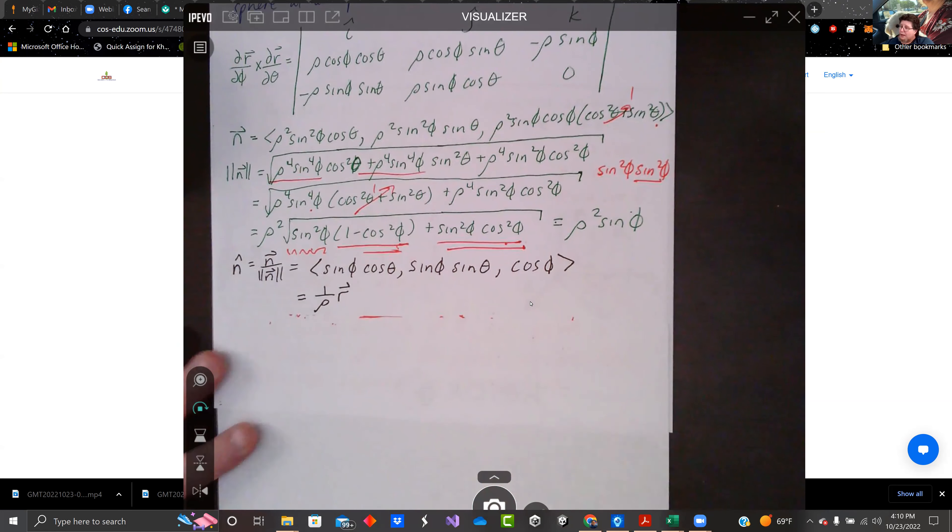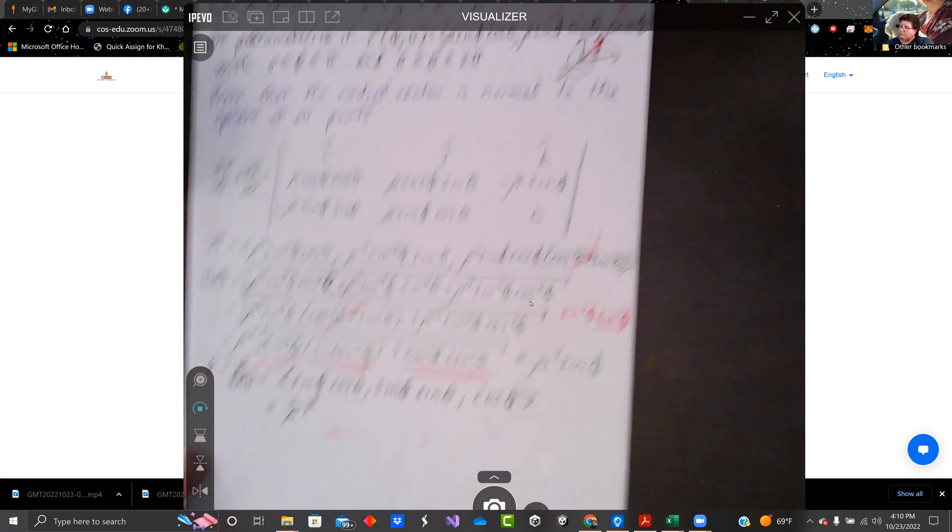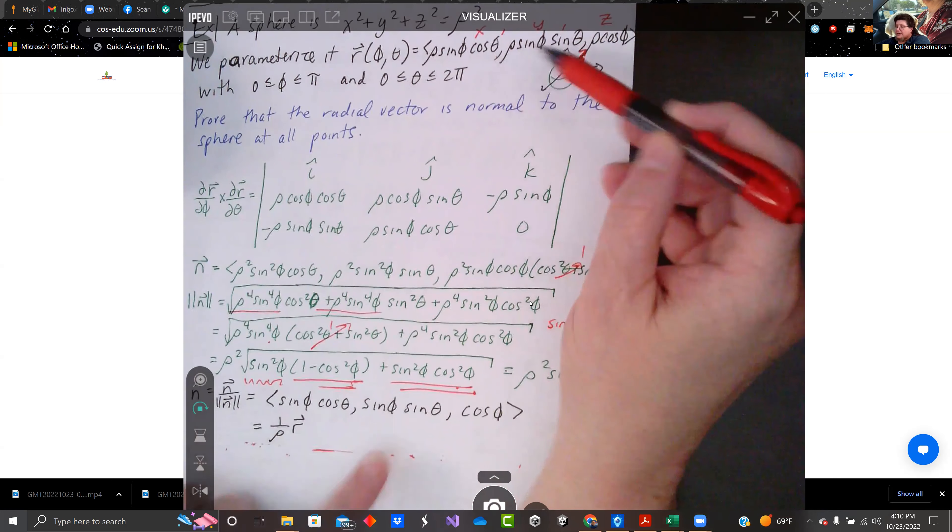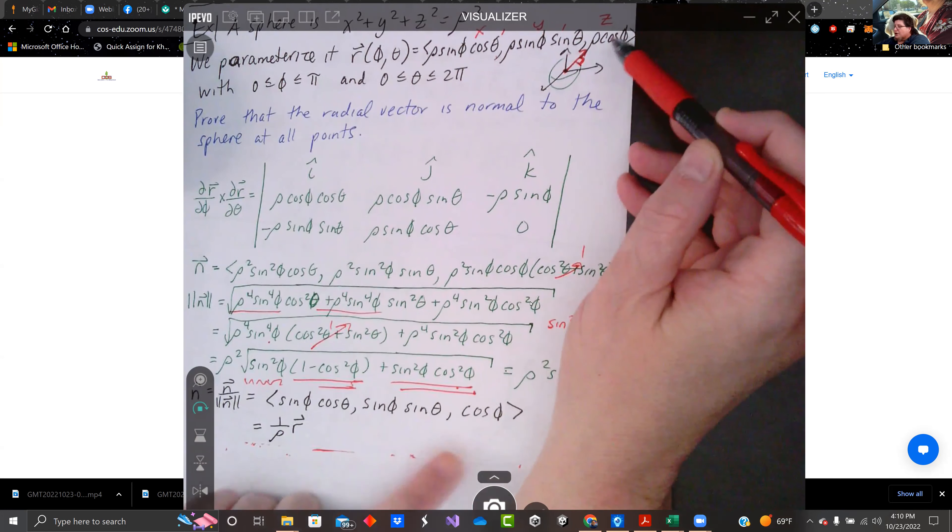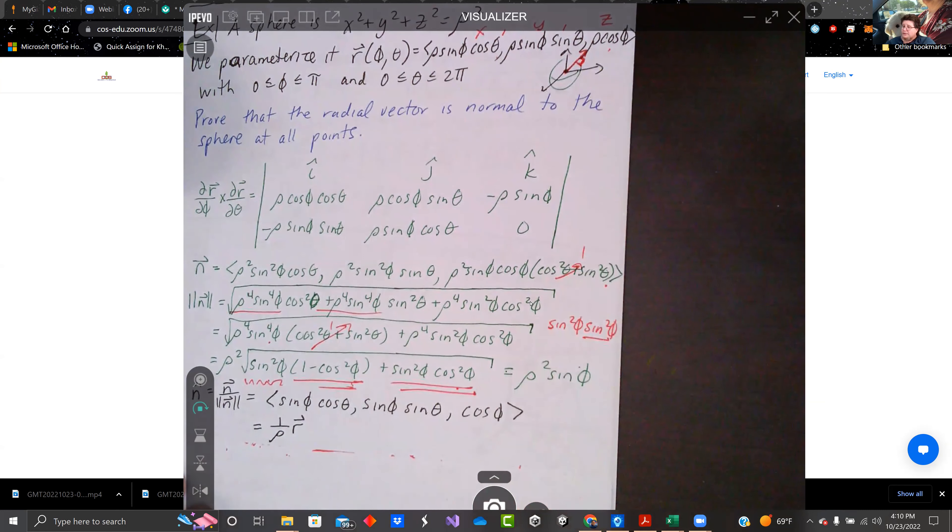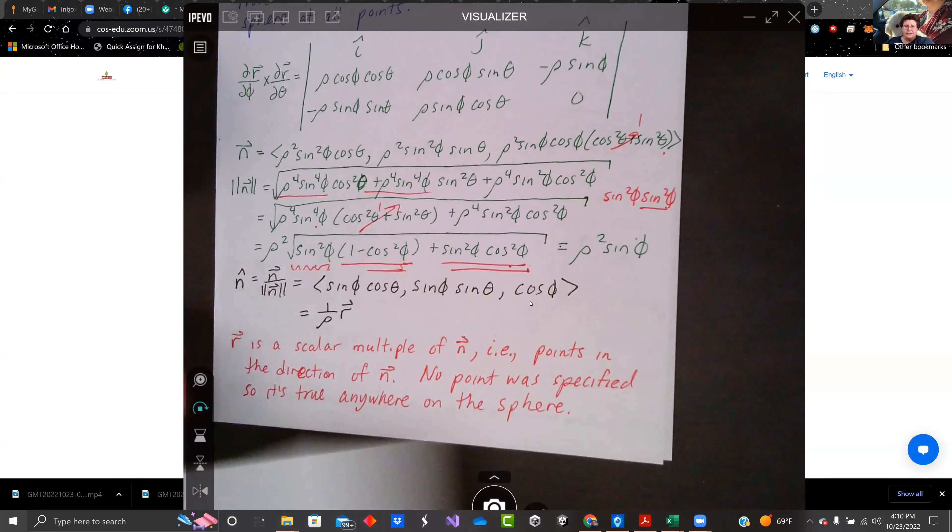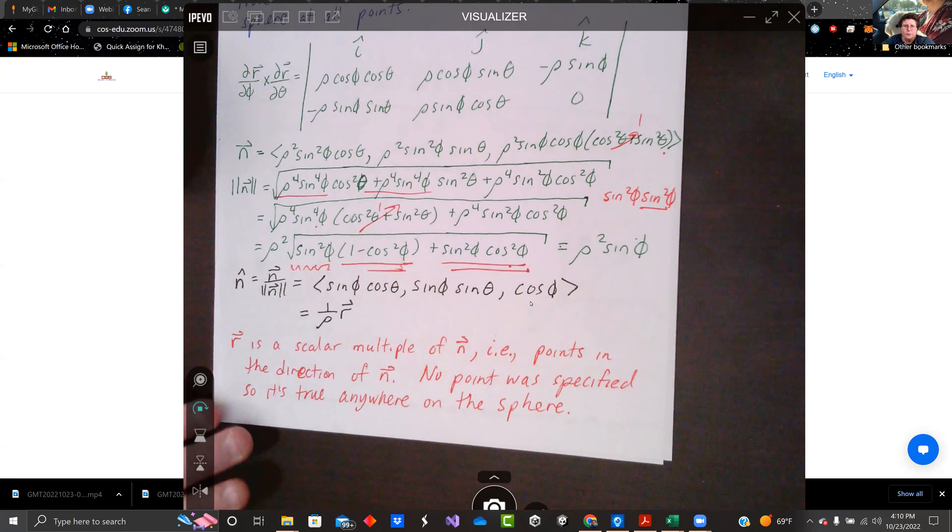And if you compare that to R, sine phi cosine theta, sine phi sine theta, cosine phi, the only thing that's missing is a rho. So this is one over rho times R. So the normal vector is a scalar multiple of the radial vector.